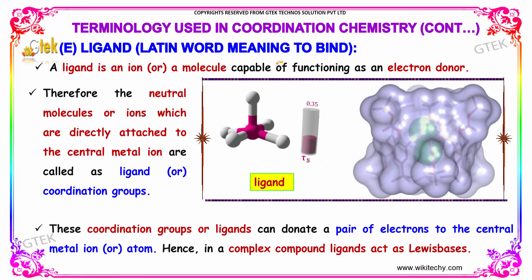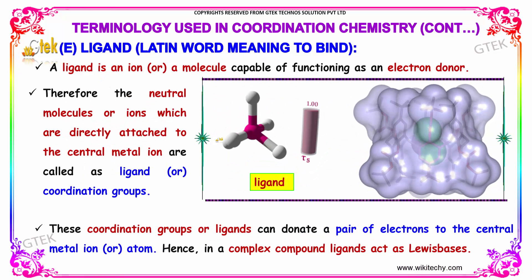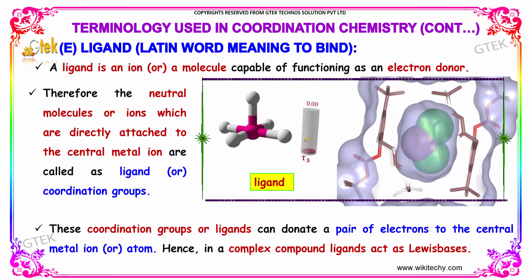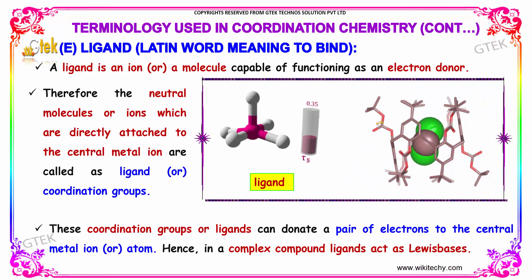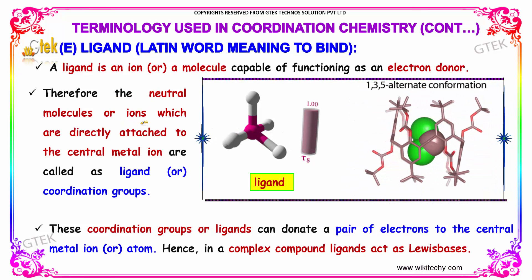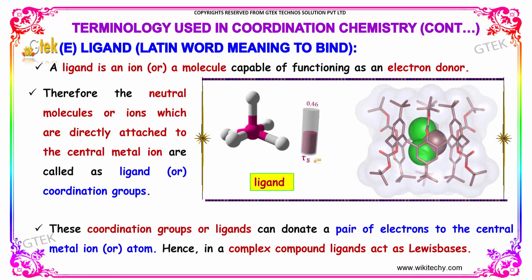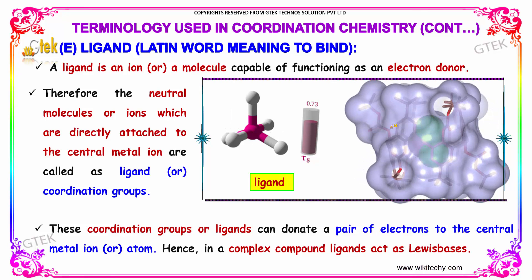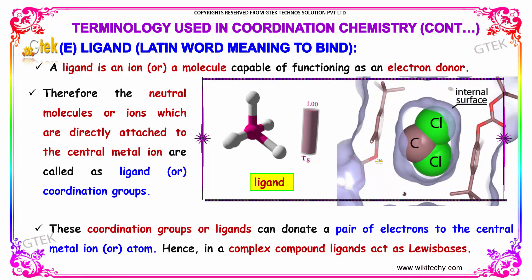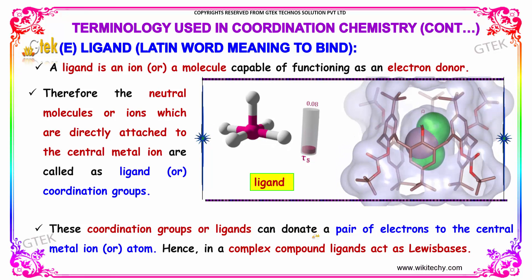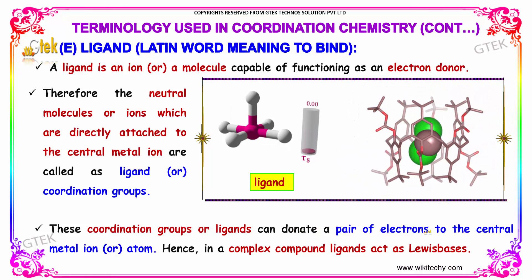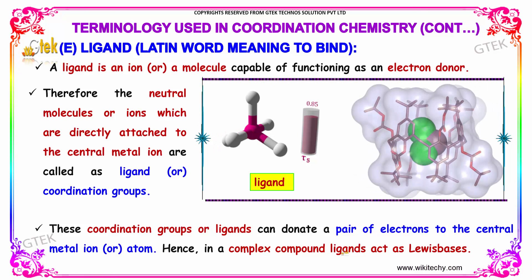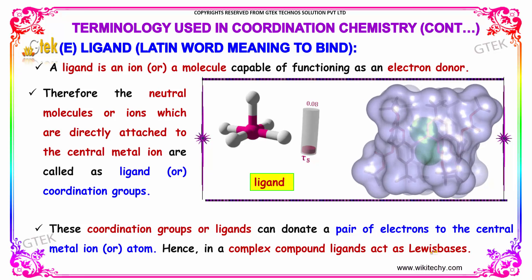Ligand — from the Latin word meaning 'to bind.' A ligand is an ion or a molecule capable of functioning as an electron donor. The neutral molecules or ions which are directly attached to the central metal ion are called ligands or coordination groups. These coordination groups or ligands can donate a pair of electrons to the central metal ion or atom. Hence, in a complex compound, ligands act as Lewis bases.